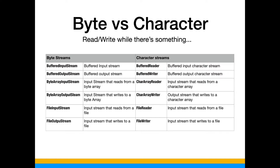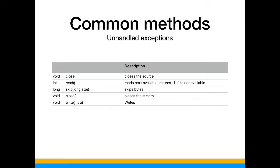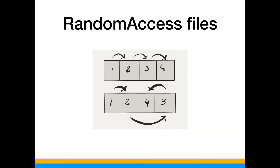On the character side — the text side — we have analogous classes. We have a BufferedReader, which grabs text and reads it in a buffer as opposed to BufferedInputStream which grabs binary data. Instead of a ByteArrayInputStream, we have a CharArrayReader that reads it size by size. The FileReader and FileWriter are analogous to FileInputStream and FileOutputStream. Common methods available to all of them are essentially read, write, skip, and close — I'll explain skip once we get into random access files.